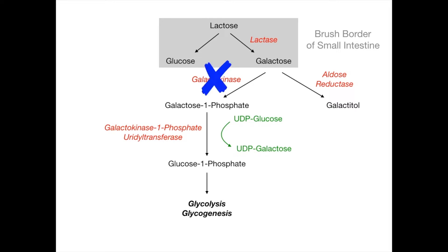The first disease is what you get if you knock out galactokinase. If you don't have galactokinase, you cannot convert galactose into galactose-1-phosphate. Instead, galactose will be shunted to the alternate pathway and converted into galactitol by aldose reductase, creating a preference to divert galactose into galactitol.